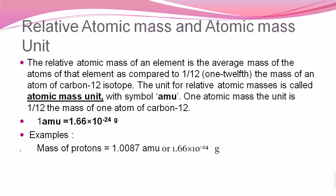When we compare the mass of an element, we compare the average mass of that element to one-twelfth of the mass of carbon-12. The atomic mass unit, abbreviated as AMU, is defined as one-twelfth of the mass of an atom of carbon-12. Carbon exists as isotopes: carbon-12, carbon-13, and carbon-14. One AMU is equal to 1.66 multiplied by 10 to the power of minus 24 grams.